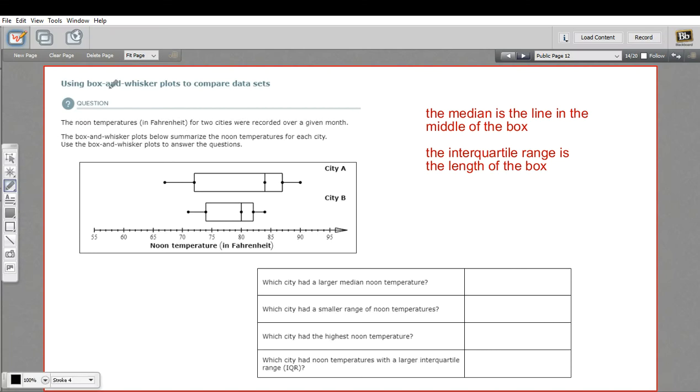In this problem, we are using something called box and whisker plots to look at two different data sets. A box and whisker plot is pretty cool. It tells you an awful lot about a data set.